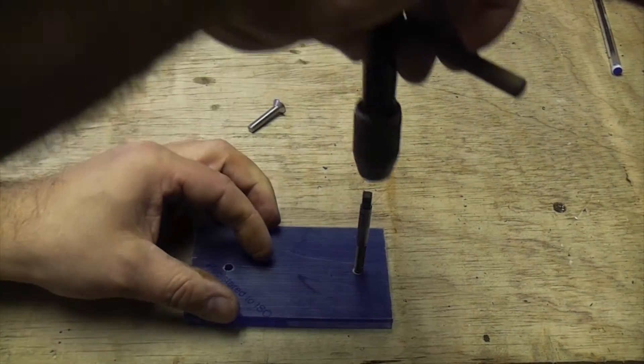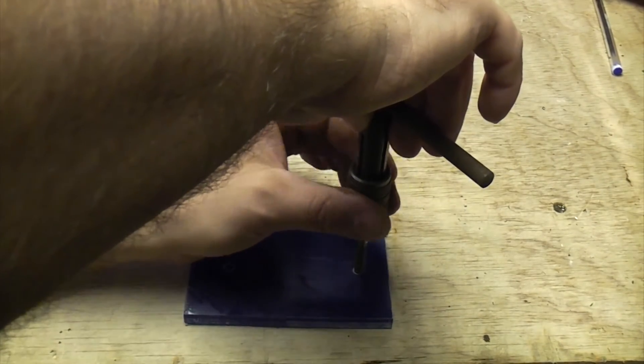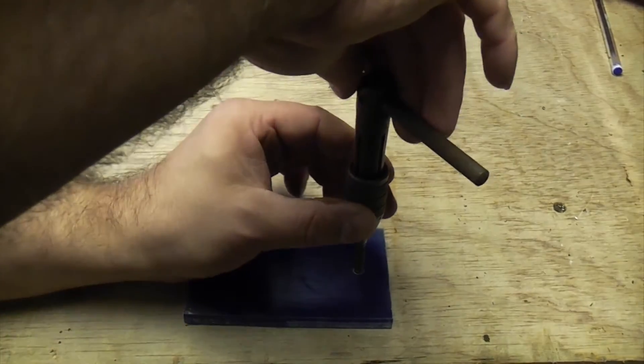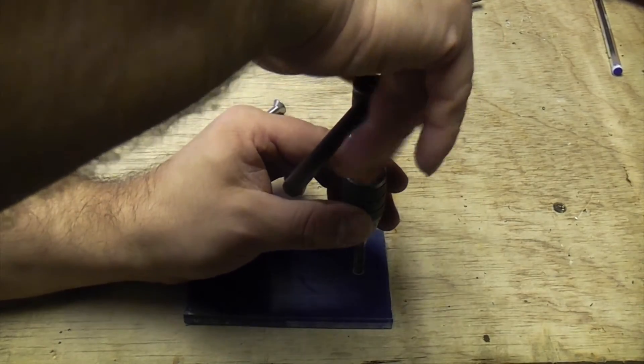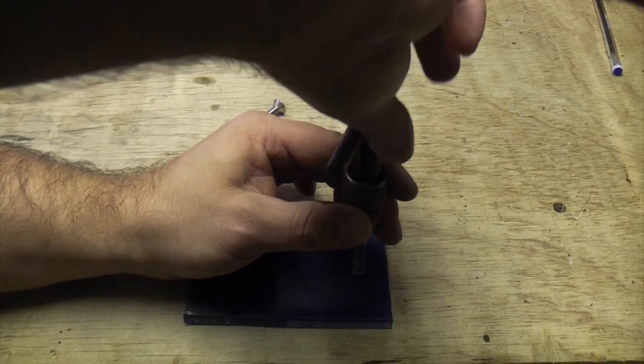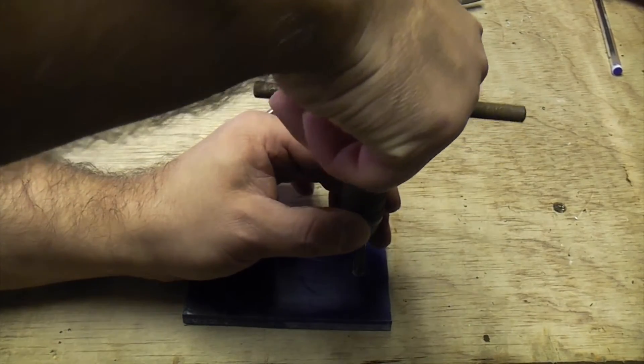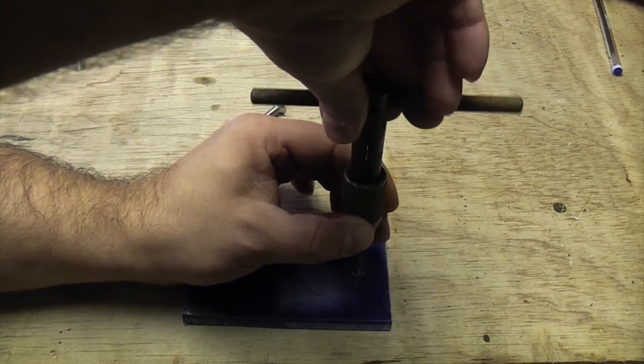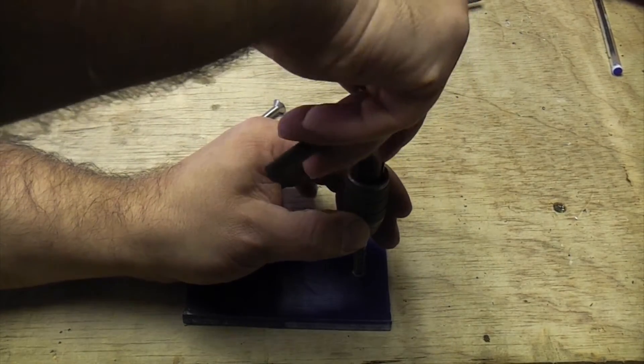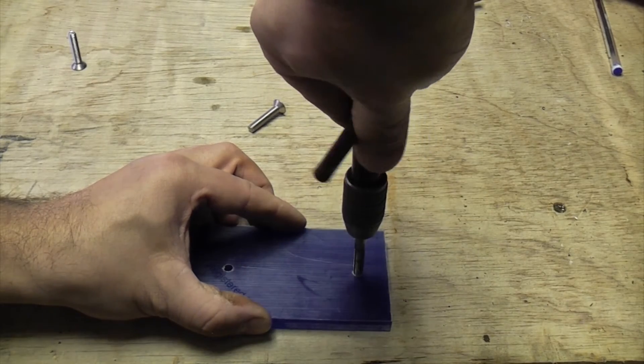We can now put the handle back on there and then we can continue tapping. If you do a few turns you will feel it get tight. So when it gets tight, if you just turn it back a little bit it breaks off the chip that you're creating, and then you can just continue again. As it's going in, it is actually cutting a thread.